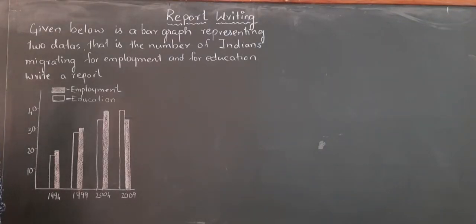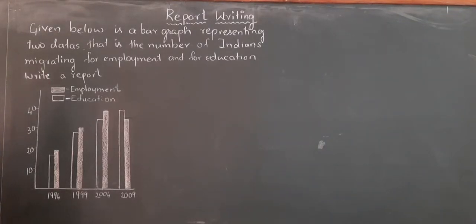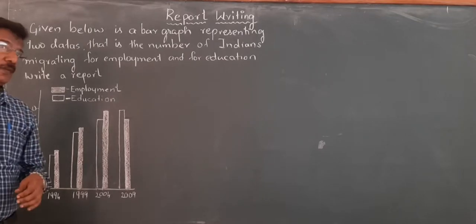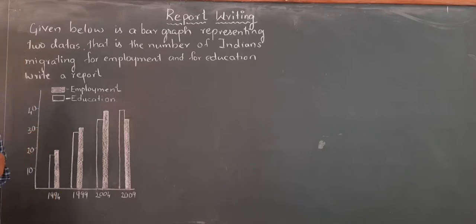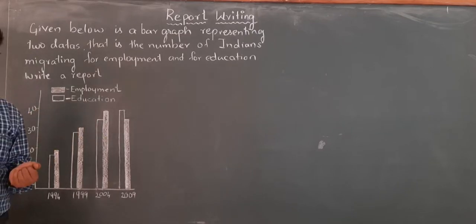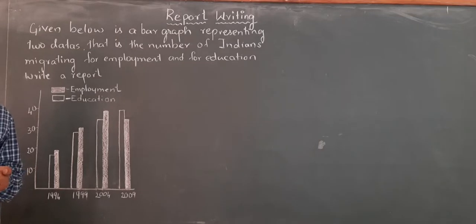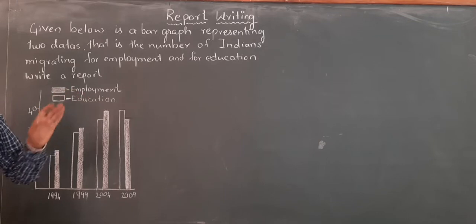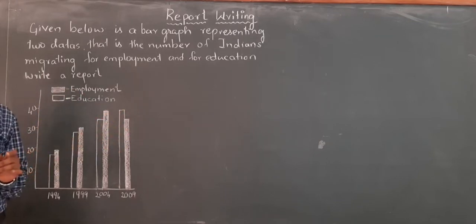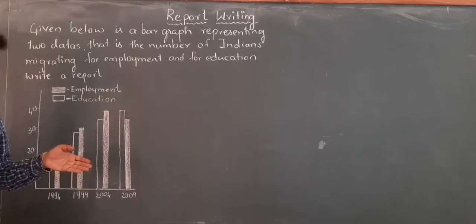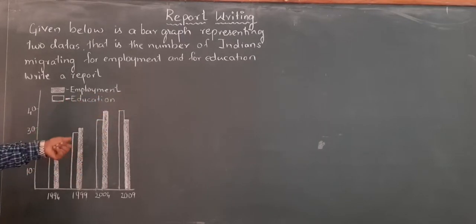Hello students. In a previous session we discussed about report writing. We discussed that there are three types of report writing: one is line graph, second one is bar graph, and third one is pie chart. In a previous session we have already written the line graph. Today we will discuss about the bar graph.